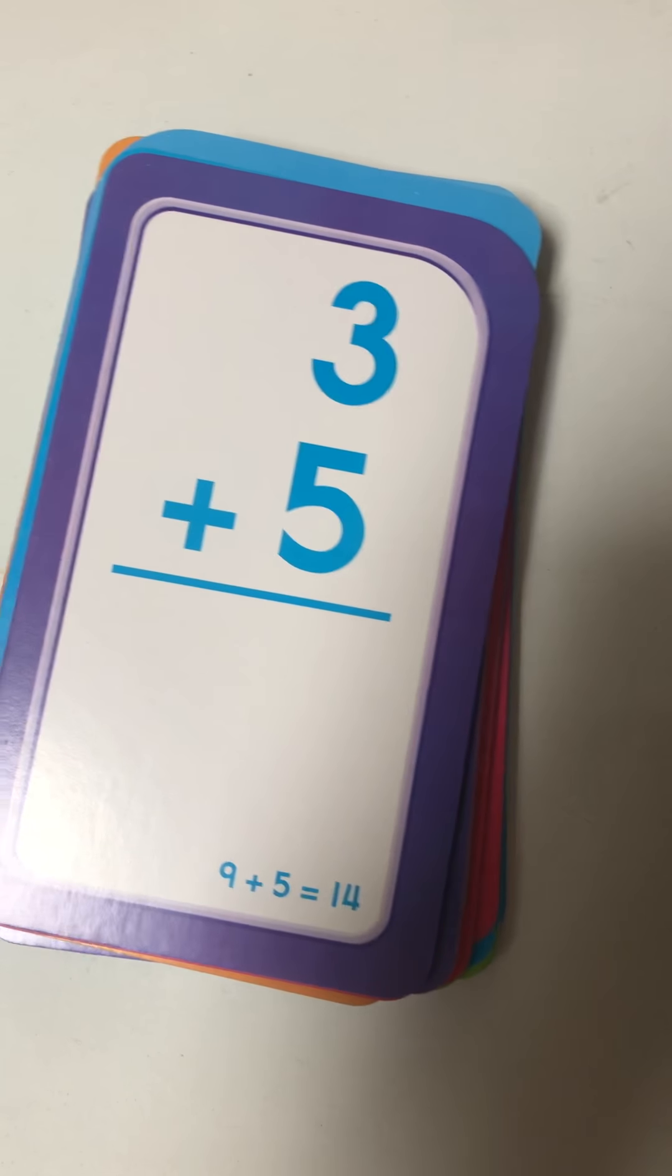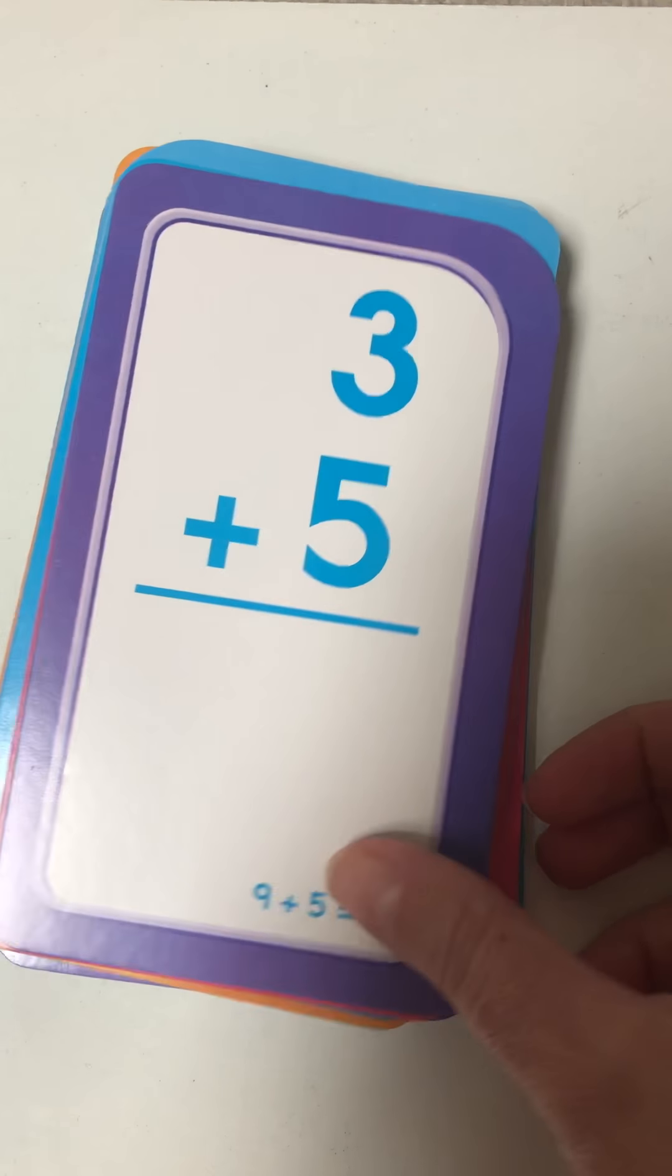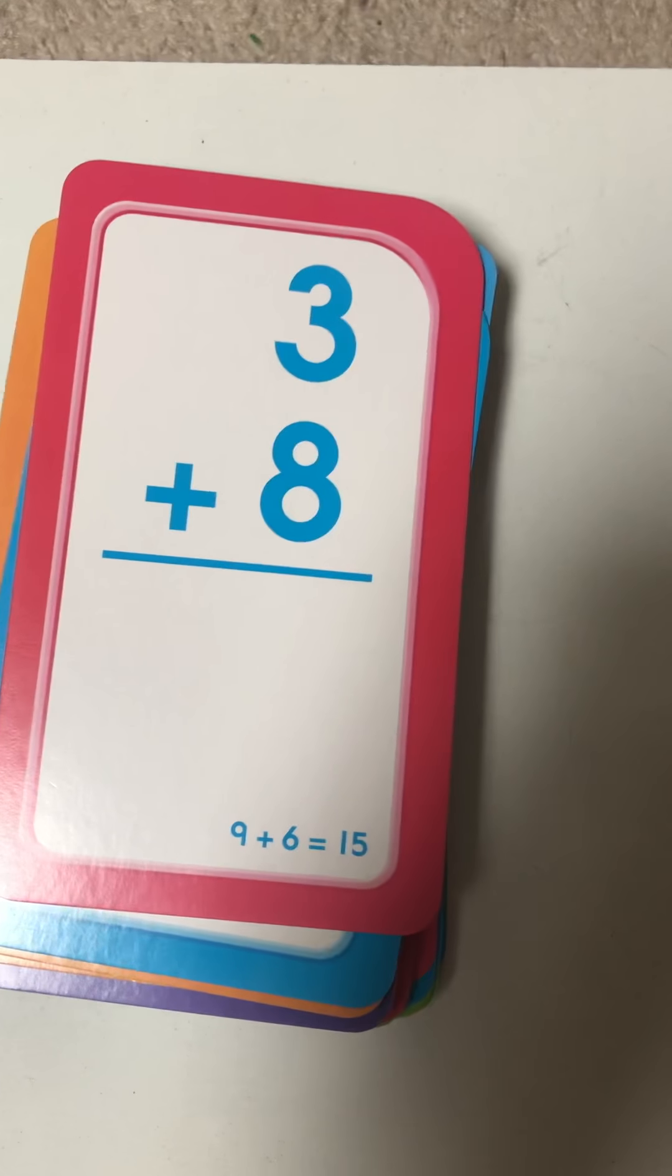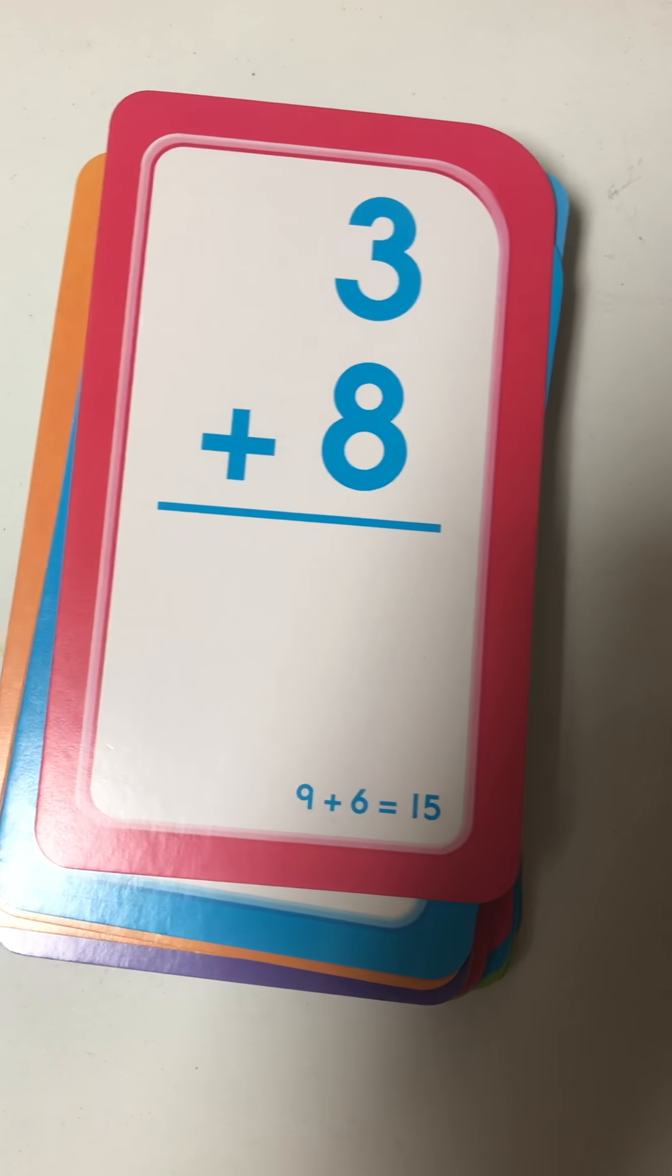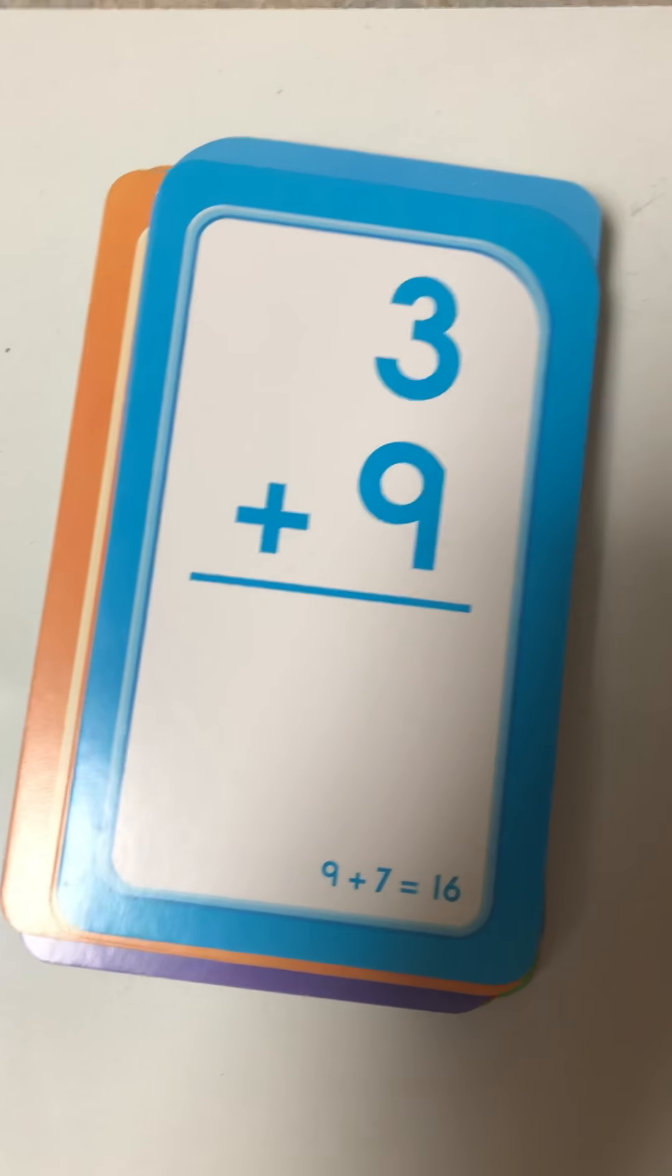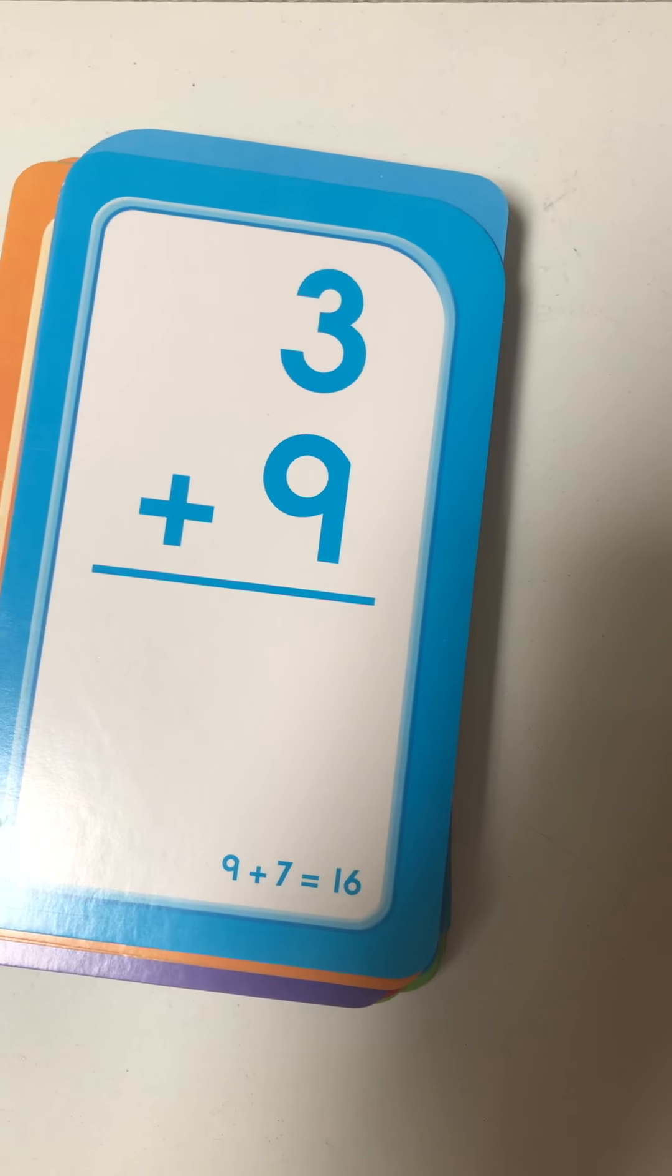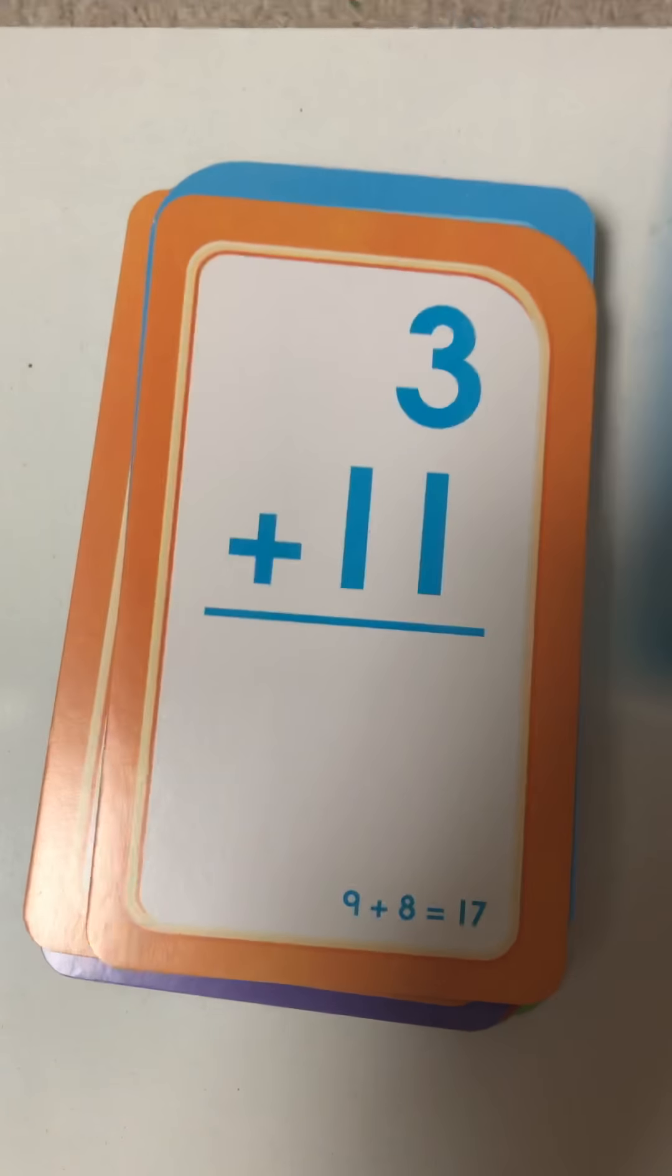Here we go, three plus five. The answer is eight. Three plus eight. The answer is 11, keep it up. Three plus nine. Remember to start with a bigger number and add on the smaller number. The answer is 12, good work.